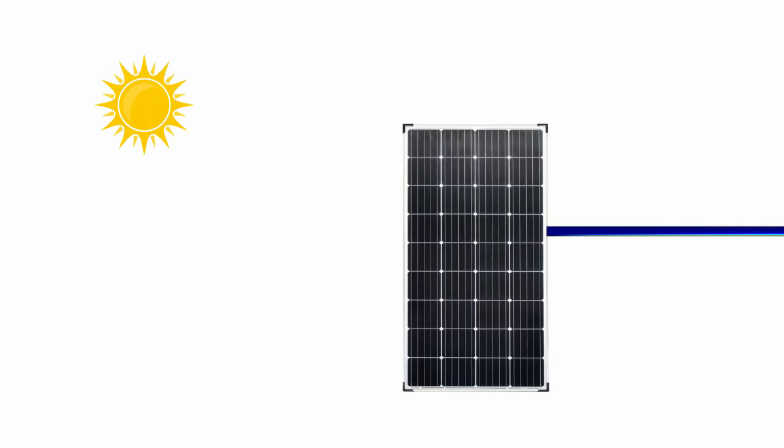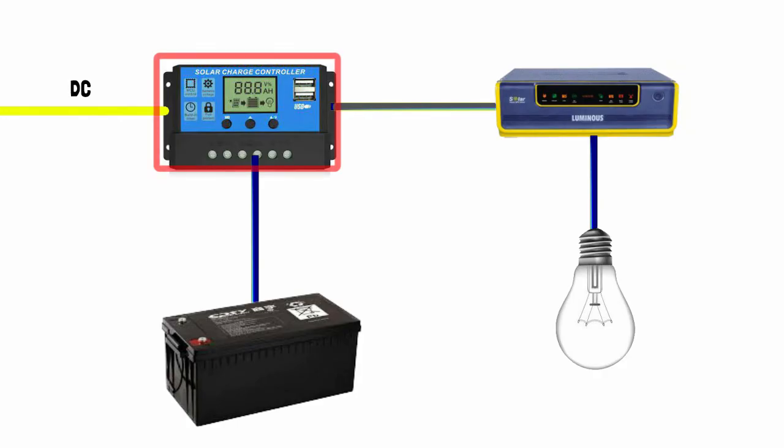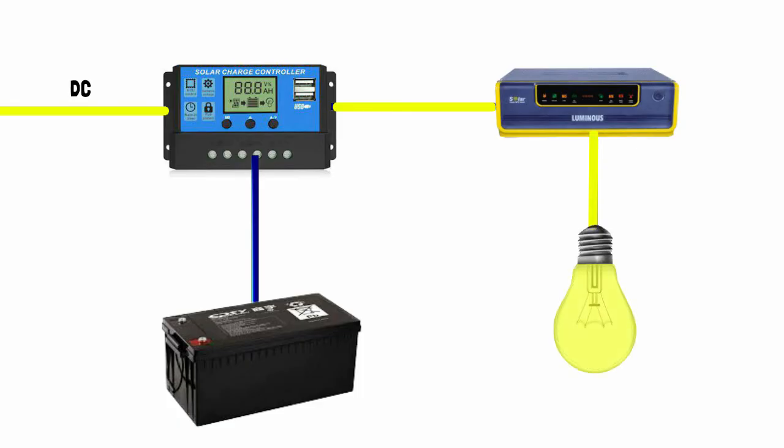When the sunlight hits solar panel it absorbs the light energy and converts into direct current. After the current is produced it goes to the charge controller where it controls the flow of current. The required energy goes to electric appliances of home through inverter where it converts the DC into AC and the extra current goes to the battery for storage.